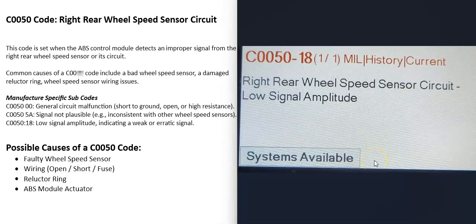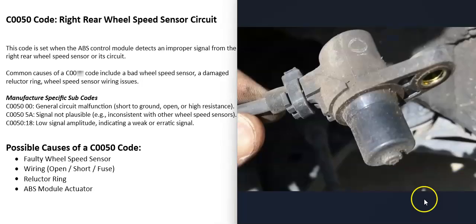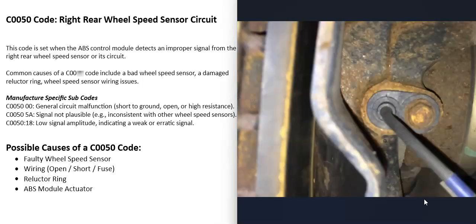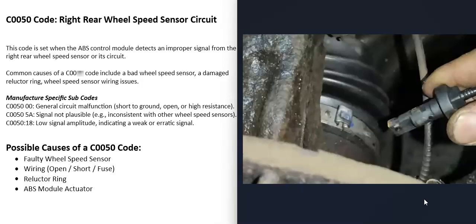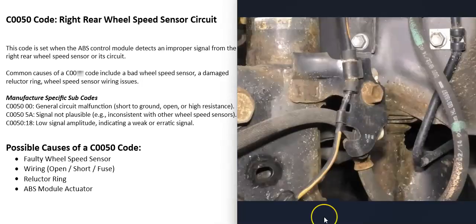What would be some possible causes of a C0050 code? The first thing that could cause this is that the right rear wheel speed sensor has gone bad and just needs to be replaced. There are different ways to test these wheel speed sensors — I've made videos on that and I'll put a link in the description box below if you want to check that out.